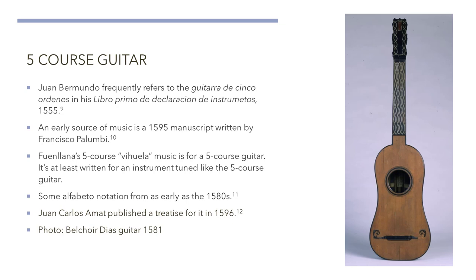So let's move on to the next guitar in sequence, which would be the five-course guitar. The five-course guitar rose shortly after the four-course guitar. It is referred to by Juan Bermundo in 1555. Interestingly, Fueniana's five-course viola music is for an instrument that is tuned exactly like a five-course guitar. Fueniana may have been referring to the five-course guitar when he said viola, but there is no proof of this — it's simply conjecture. There are other sources of music for this guitar published in 1595 and 1596, and there is something referred to as alfabeto notation from as early as 1580. The image in this slide is a beautiful five-course guitar from 1581.